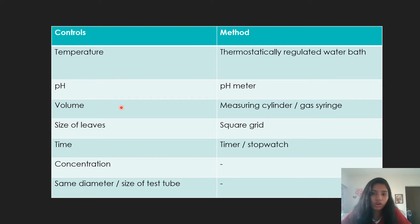You can measure the volume using a measuring cylinder or gas syringe. The size of leaves using a square grid. Or you can just write size of leaves. That doesn't matter. Time using a timer or stopwatch. The concentration of a solution. And the test tube. The size and diameter of a test tube. This depends on certain specific experiments. So ensure that whatever control you're writing adheres to the experiment and the method following.